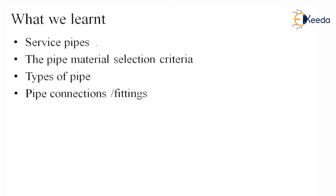What we learned in this lecture: we learned about service pipes — the pipes which connect the building with the main water supply and run throughout the building to get water to our taps. We covered the pipe material selection criteria, which should be assessed on quality, cost, maintenance, durability, and lifespan. We looked at the types of pipes, from copper pipe to asbestos cement pipe and stoneware pipe. And finally, we studied eight types of pipe connection fittings, starting from the elbow and ending with the gasket. Thank you.